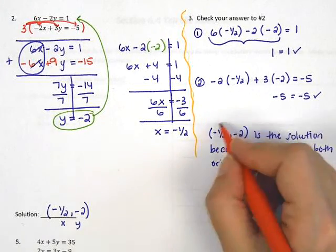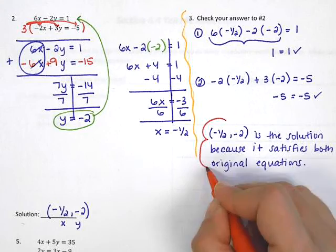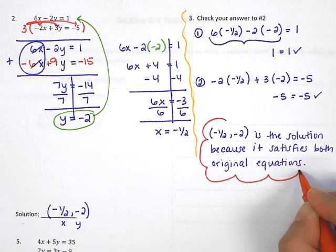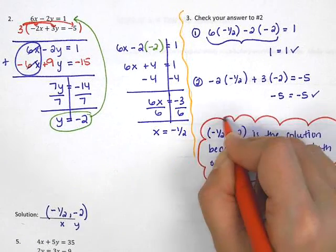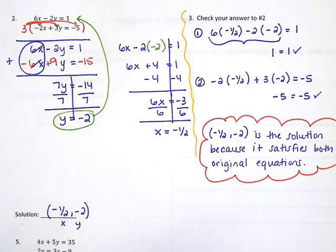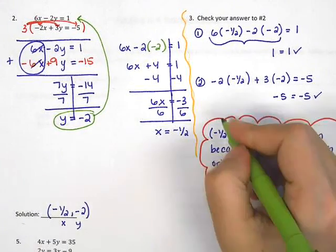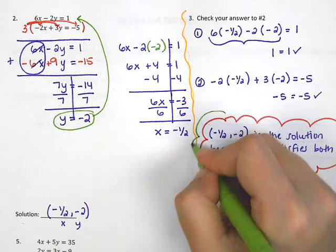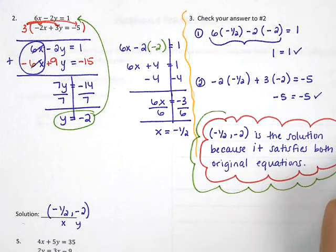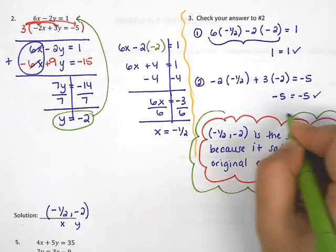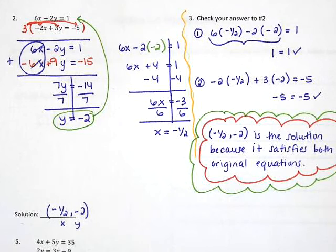But we are not done. Just like we saw in yesterday's video, we need to write a sentence here to justify our answer. So we would write: negative 1 half, negative 2 is the solution because it satisfies both original equations.